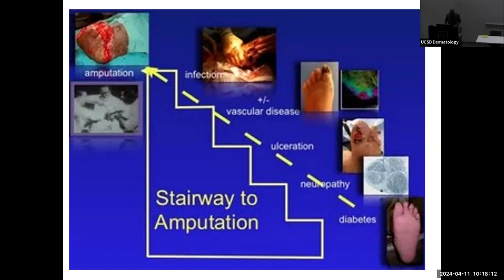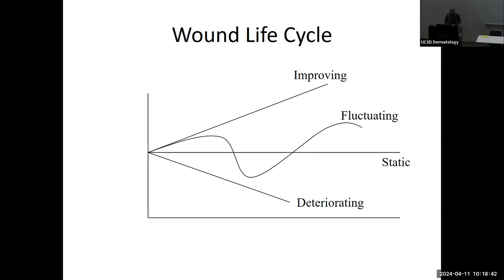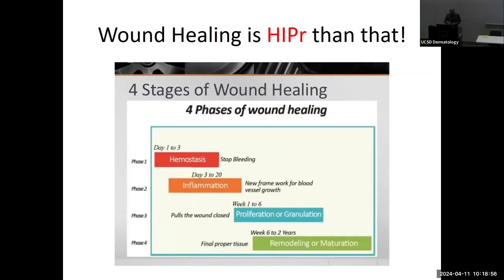Diabetic ulcers are a huge problem from an amputation standpoint — one of my passions is limb salvage. My patients know my saying: I'm allergic to amputations. Wound care costs run into the billions, and simple wound care could save patients from amputations and significant morbidity. Unfortunately, less than one million patients are sent to wound care centers, and often clinicians will manage patients themselves as an afterthought. Most wound cases will fluctuate — waxing and waning — and our goal is to figure out how to break that cycle.